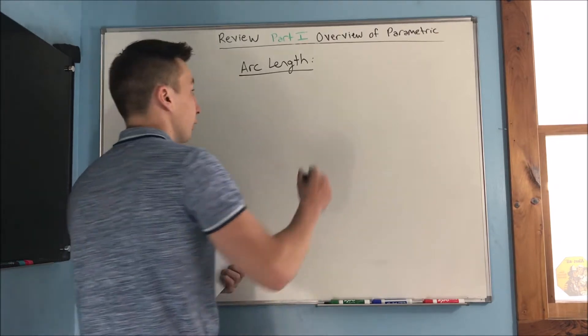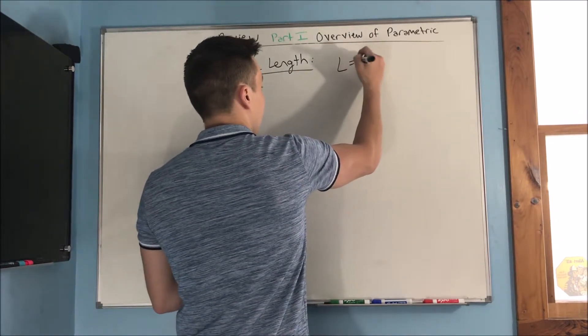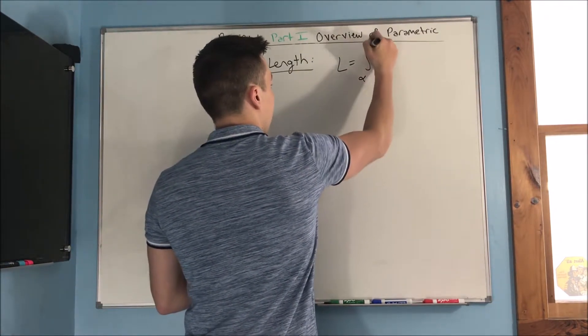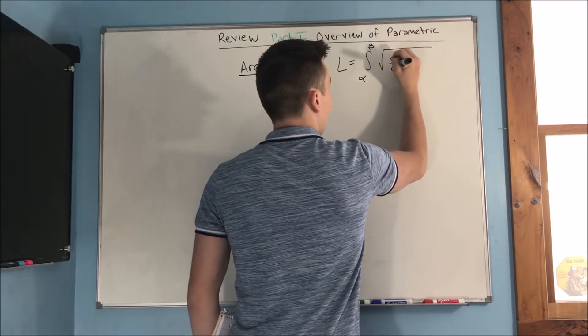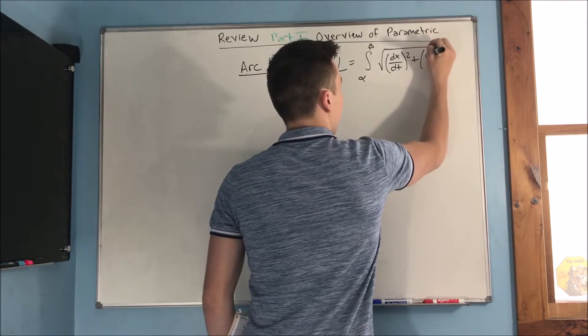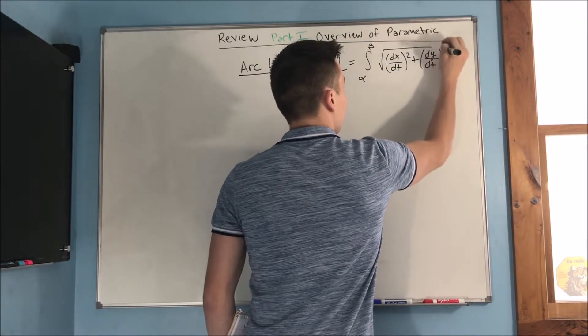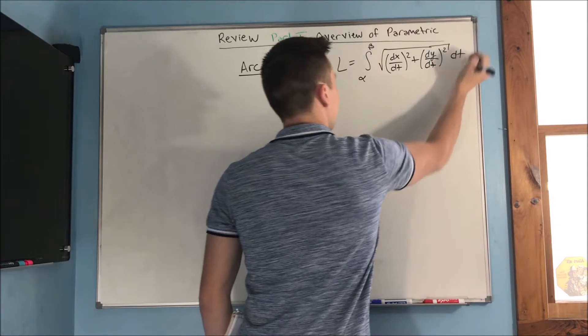But the arc length equation for parametric is just that the arc length equals the integral from alpha to beta of dx dt squared plus dy dt squared dt.